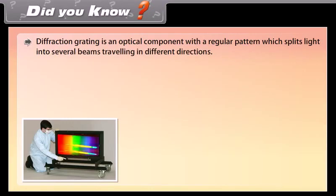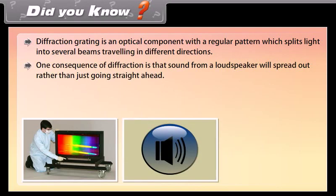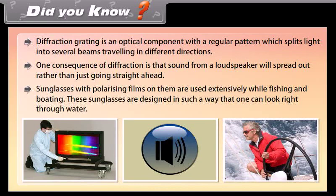Did you know: a diffraction grating is an optical component with a regular pattern which splits light into several beams traveling in different directions. One consequence of diffraction is that sound from a loudspeaker will spread out rather than just going straight ahead. Sunglasses with polarizing films are used extensively while fishing and boating, designed so one can look right through water. Reflection of waves off sea walls or other barriers can cause an interference pattern called a standing wave, in which crests do not move laterally.